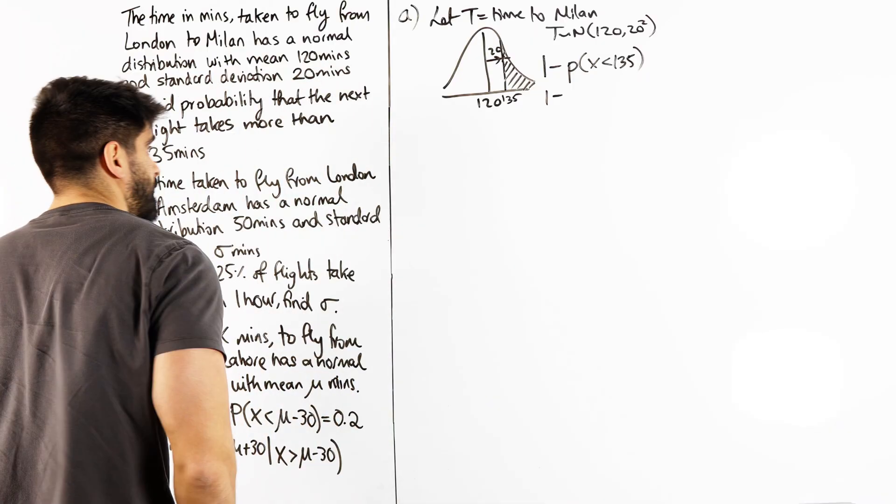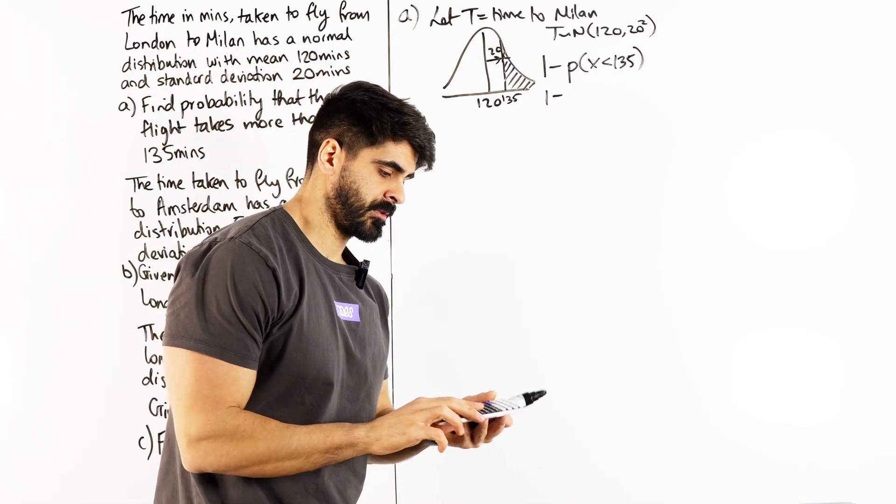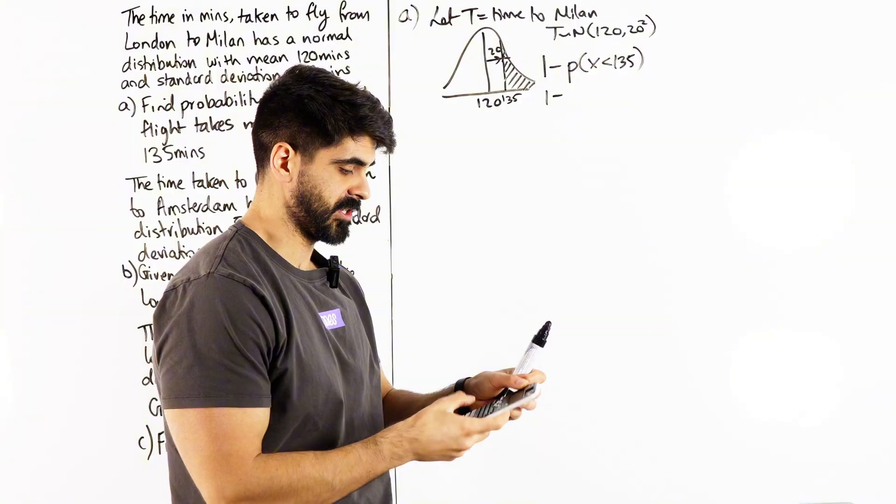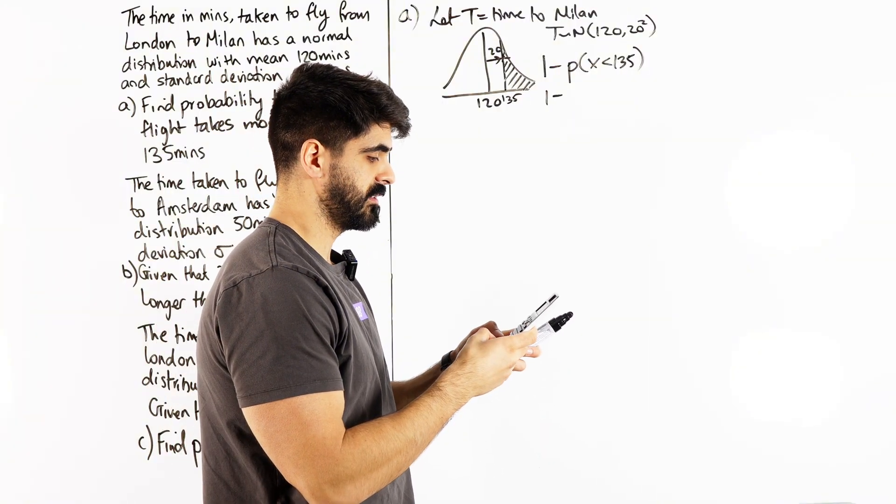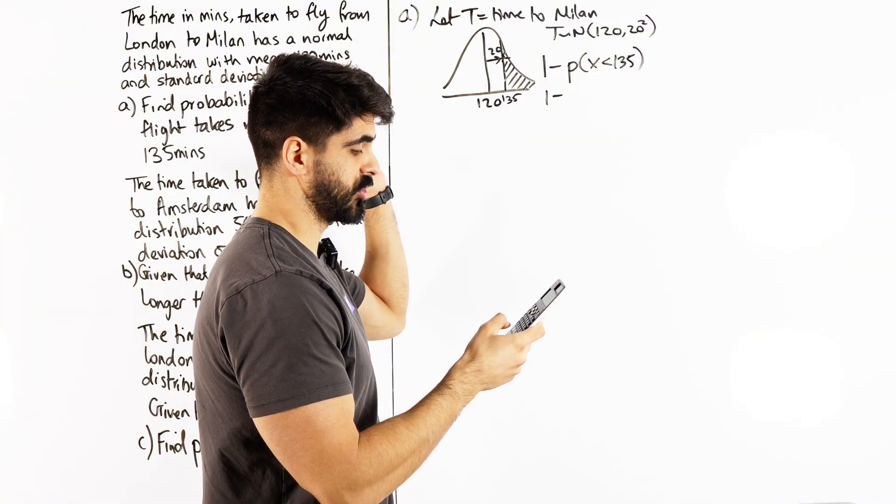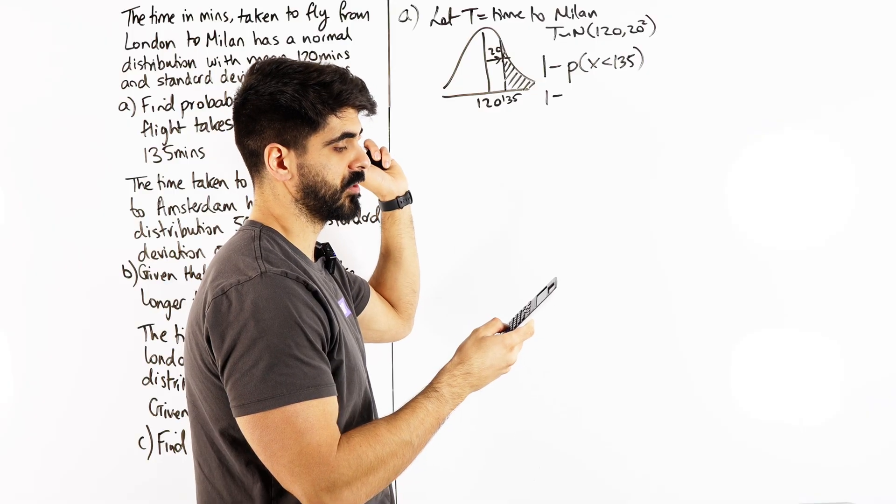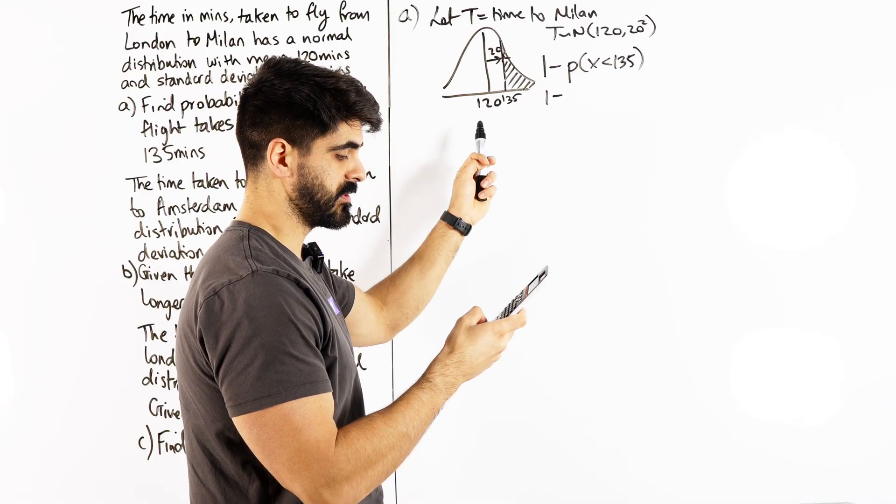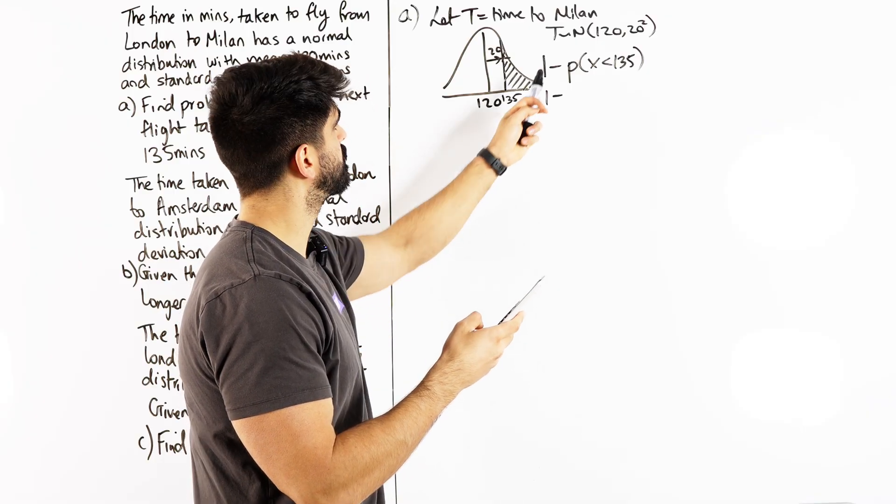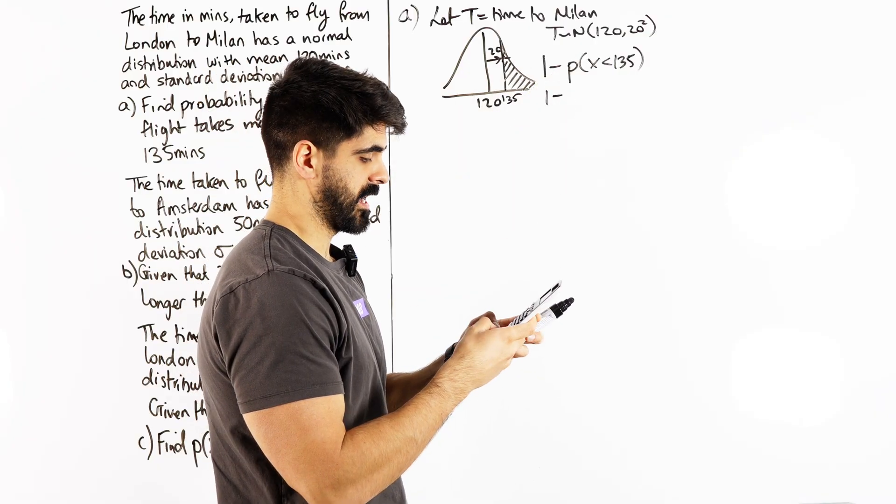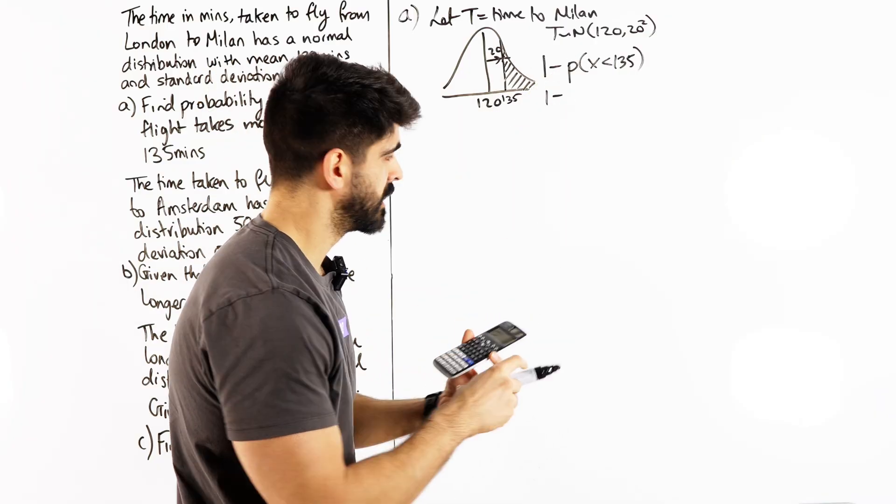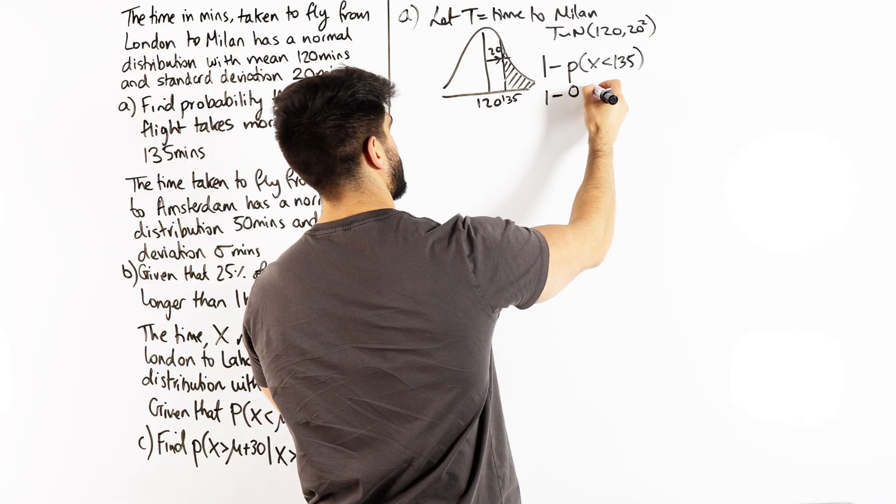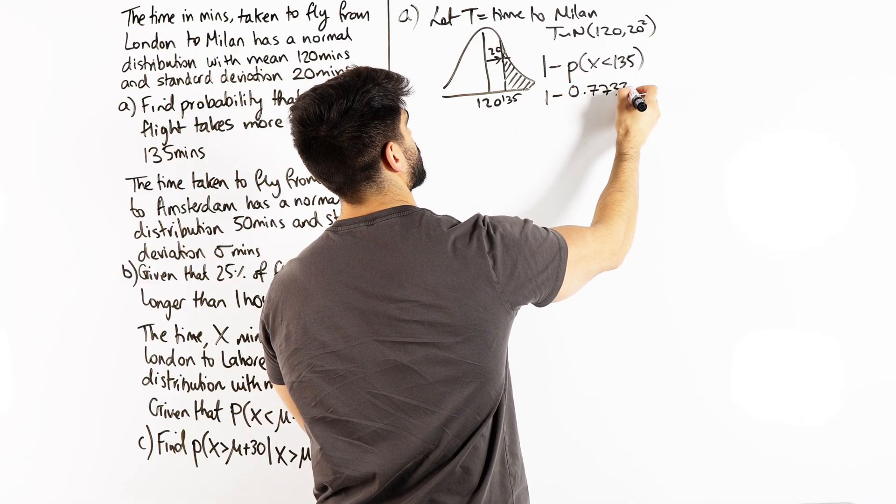Okay, so where's my calculator? We can put this in. So you've got normal cd. My lower, we're just going to do negative bunch of nines. My upper, 135, sigma 20 and then we have 120. So that gives me 0.7733 dot dot dot.